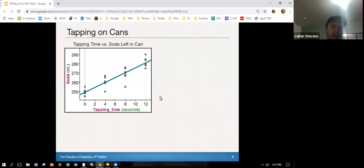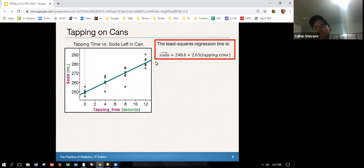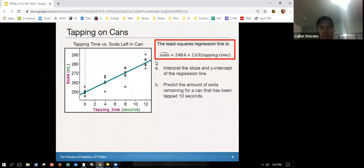All right, so here's what we have. We have the data here and we have it grouped because we had some that were tapped for only 0 seconds, some for 4, some for 8, some for 12. So we can see that they have some nice clusters there. So here's the least squared regression line that has been put from that. Again, we'll figure out how to do this ourselves, but this is what it's for us now. So we're just looking at the interpretation. So interpret the slope and y intercept of the regression line, let's predict the amount of soda remaining for a can that has been tapped for 10 seconds, and let's predict the amount of soda remaining for a can that has been tapped 60 seconds.